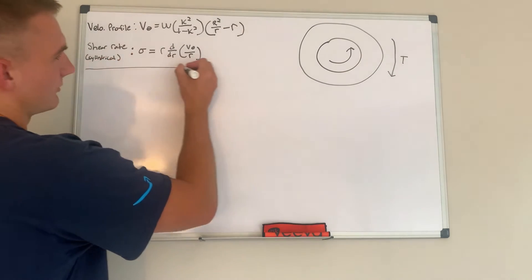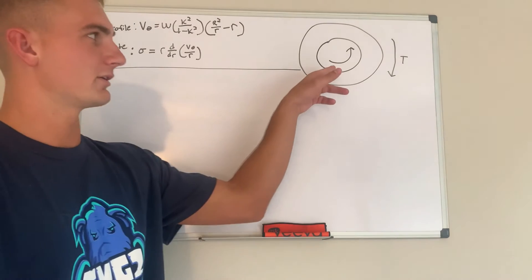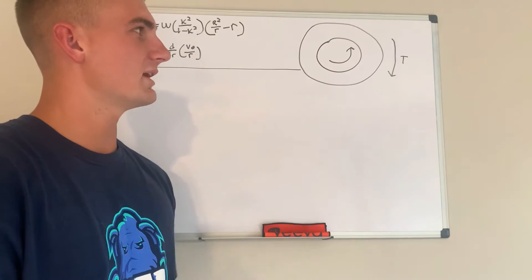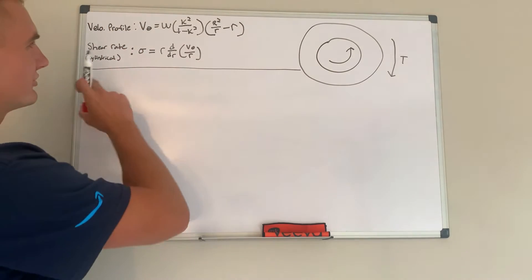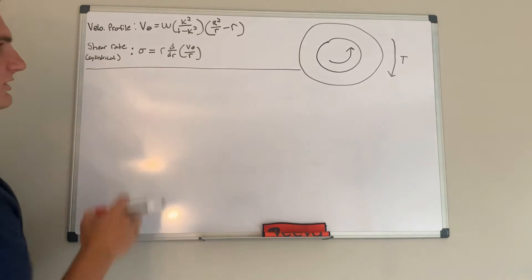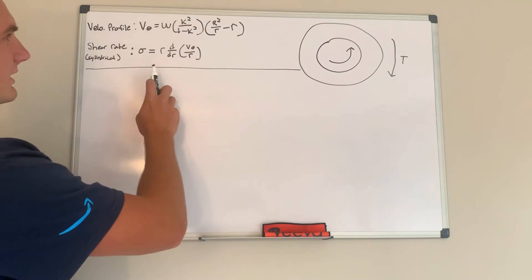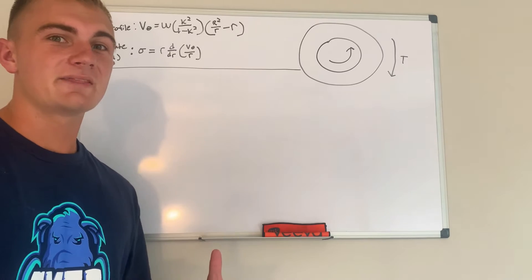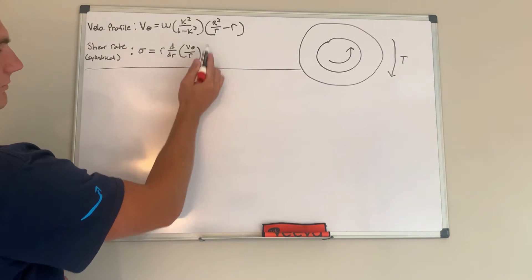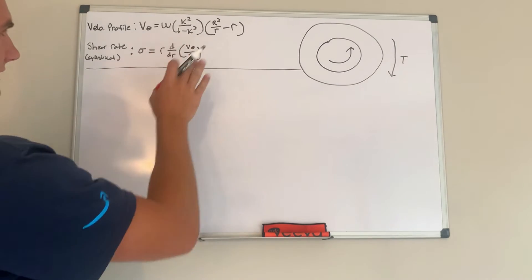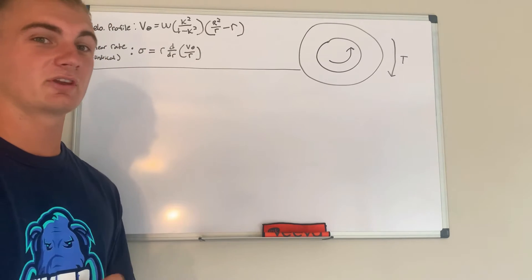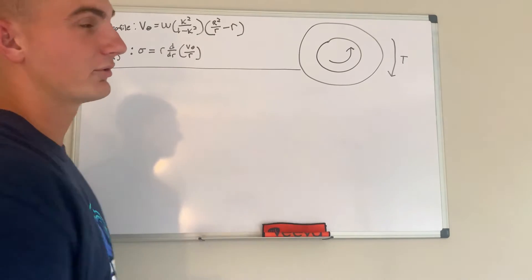To find the torque we need both the force and the lever arm. To find the force we first need the shear rate at the surface of the inner cylinder. Since we know the shear rate for cylindrical coordinates and have the velocity profile, we can plug V_theta into the shear rate expression to find the shear rate at the inner radius. We will do this step by step, then take a conceptual look at what other parameters are needed.